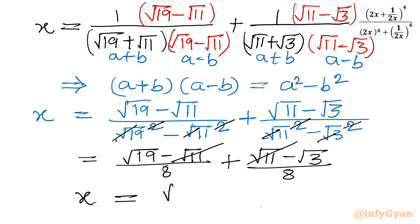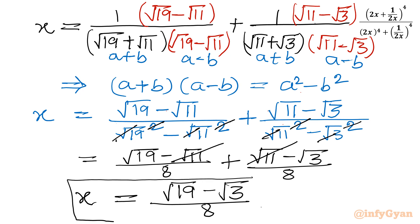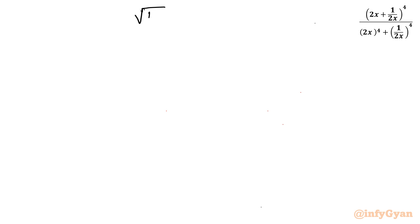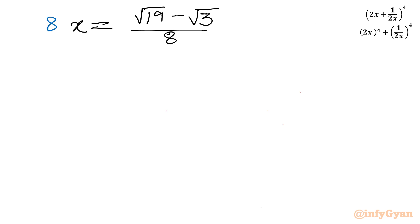So x is ultimately simplified to (√19 − √3)/8. Multiplying both sides by 8 gives 8x = √19 − √3.